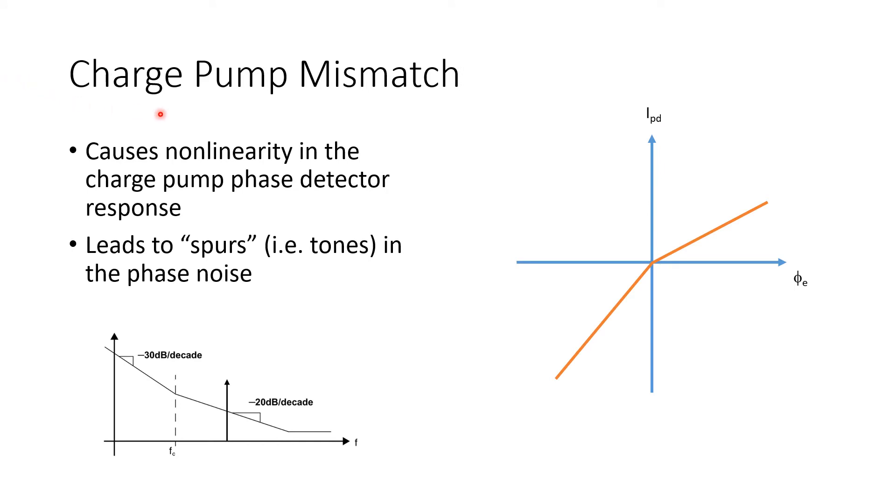And in the presence of such mismatches between the charge pump pull-up and pull-down currents, you essentially have an input-output relationship for the charge pump phase detector as shown here. So here's a plot of phase error between the reference clock and the VCO clock, or a divided version of the VCO clock, on the x-axis.